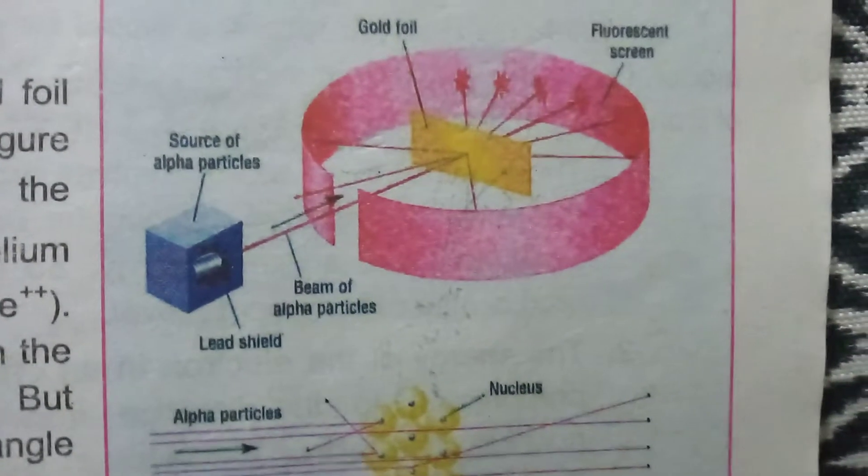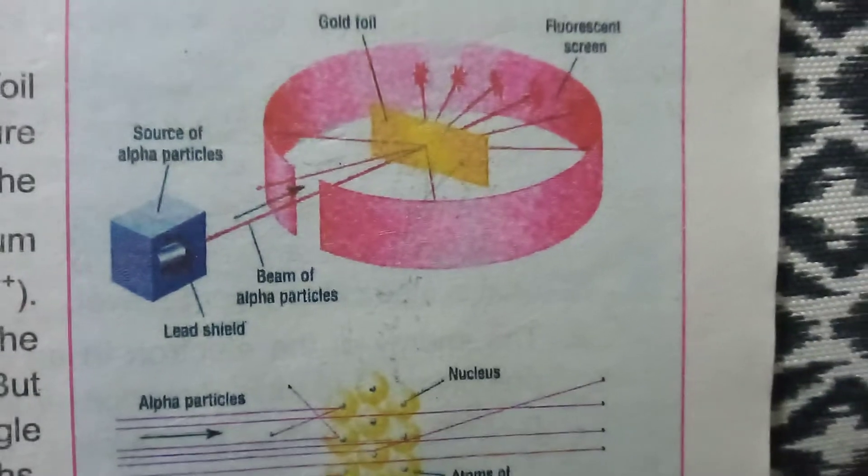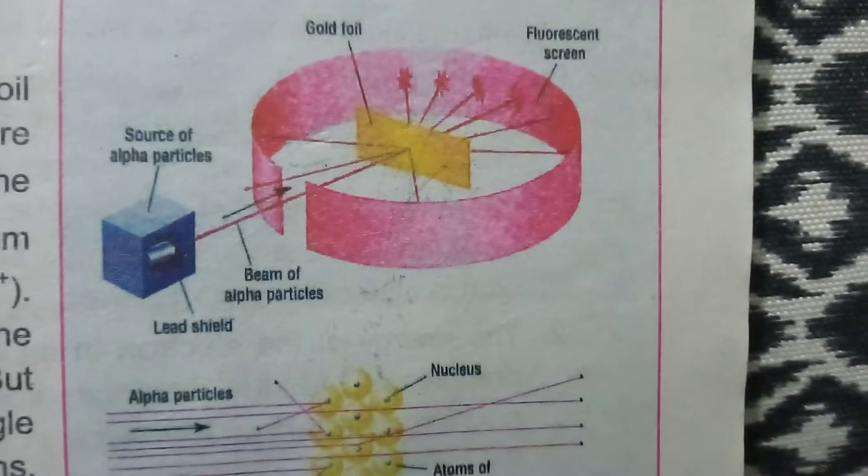On the basis of the conclusions drawn from this experiment, Rutherford proposed a new model — a planetary model similar to the solar system. He proposed that the atom is a neutral particle, meaning it has no overall charge, and that the mass of the atom is concentrated in a very small, dense, positively charged region.